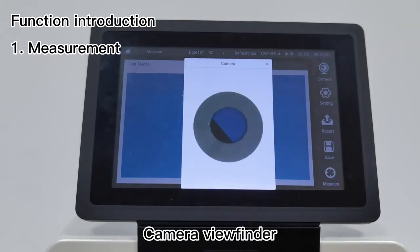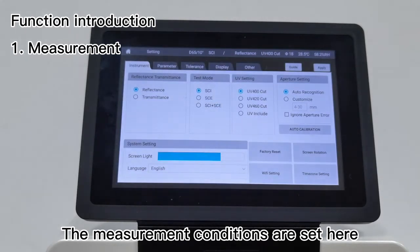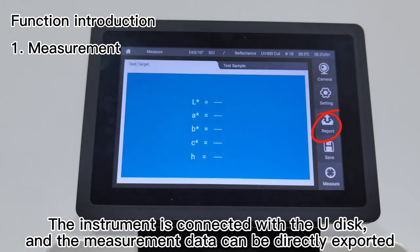Instrument setting function allows measurement conditions to be set here. The instrument is connected with the U-disk and measurement data can be directly exported.